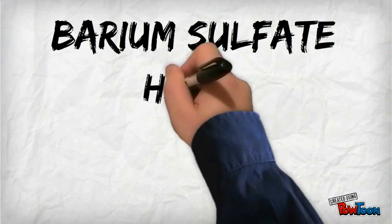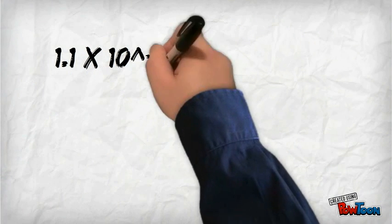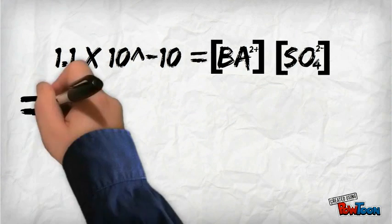Barium sulfate has a really, really low Ksp. To be exact, it has a Ksp of 1.1 times 10 to the negative 10.